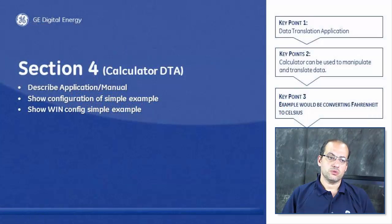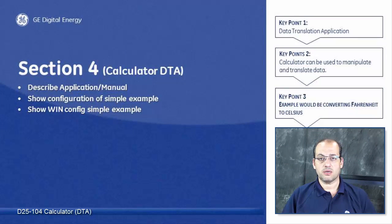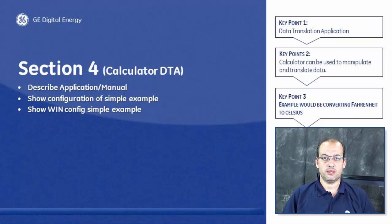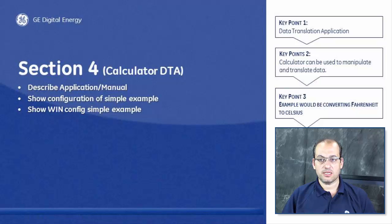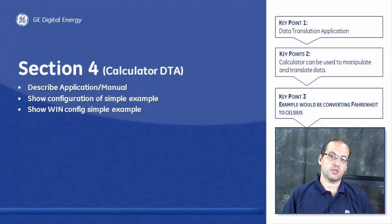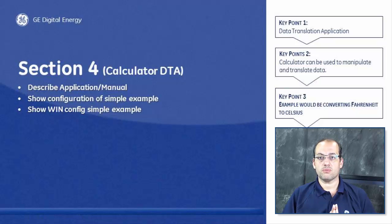In this section I'm going to show you how to configure the Calculator application. The Calculator can take points from the WIN database and then alter or create new points in the WIN database, or control other points for other applications. From that perspective, the Calculator is a very good example of a Data Translation Application, or DTA.